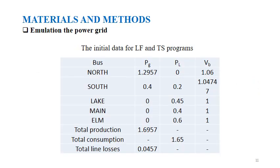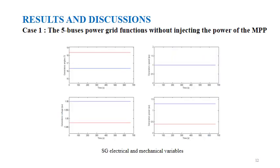This table shows the initial data for load flow and transient stability calculations, where PG is the generated power, PL is the consumed power, and VB is the voltage at the bus. Results and Discussions. To study the impact of integrating renewable energy micropower plants on the stability of the five-bus power grid and to analyze their mutual interaction in grid-connected mode, four cases are presented.